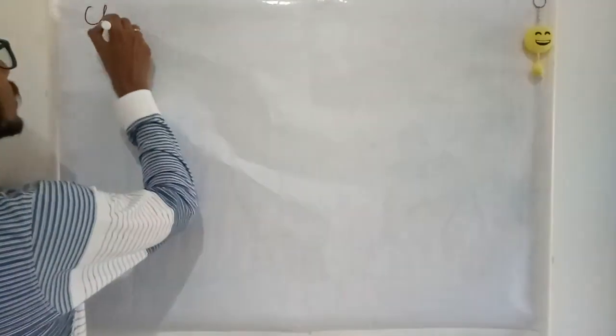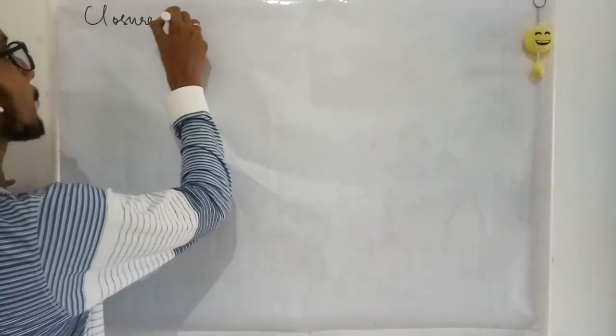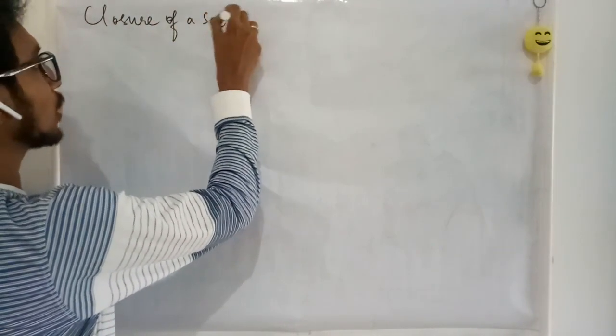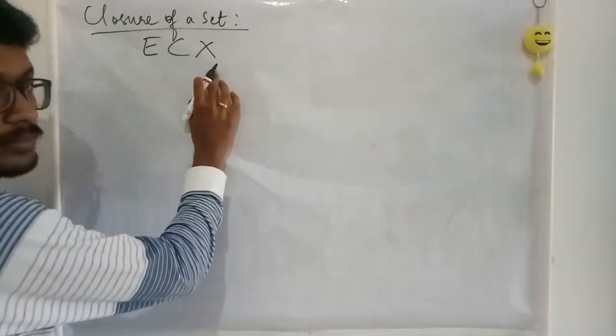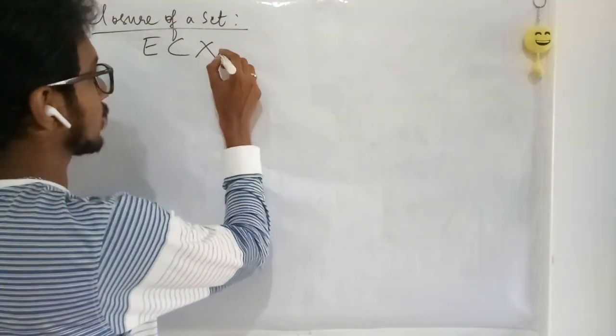Welcome to the lecture series on real analysis. In this lecture we are going to continue with a few more ideas and examples of boundedness and closeness, and we are going to define something called the closure of a set. In order to define the closure of a set, we take a subset of a metric space X.